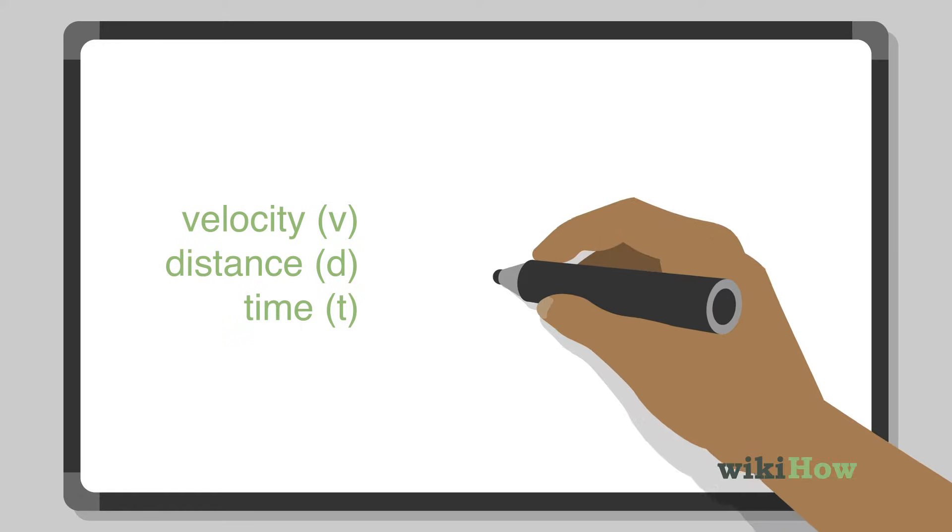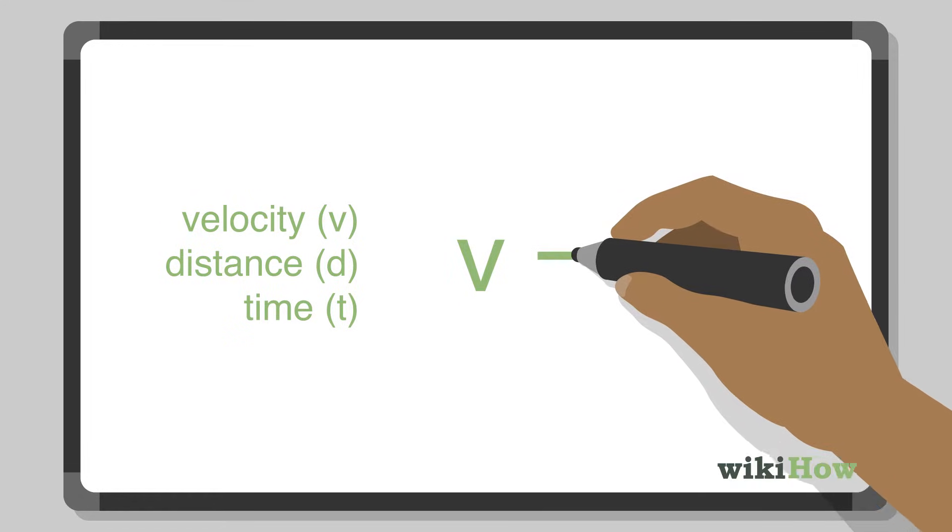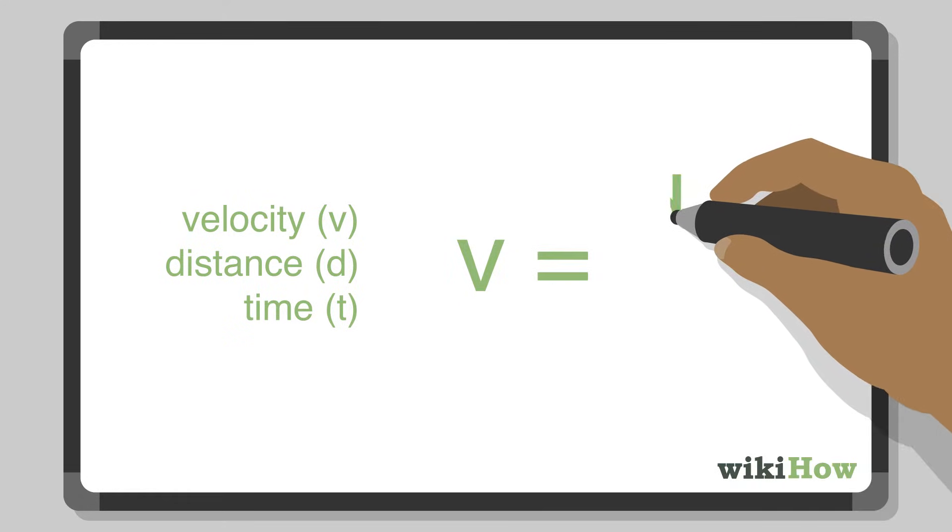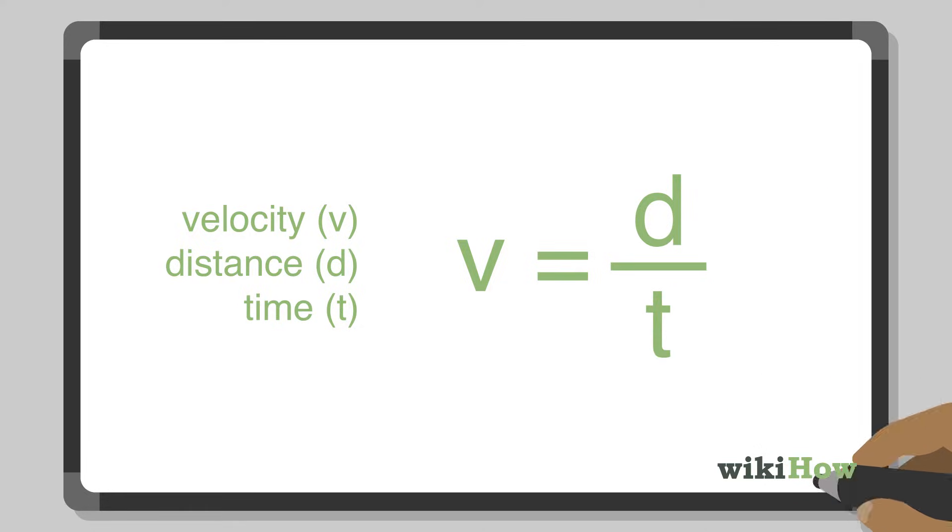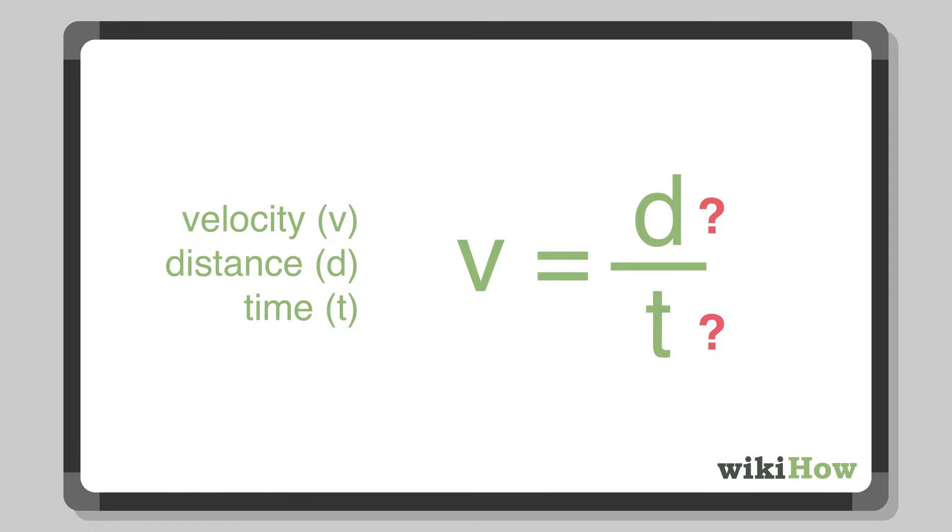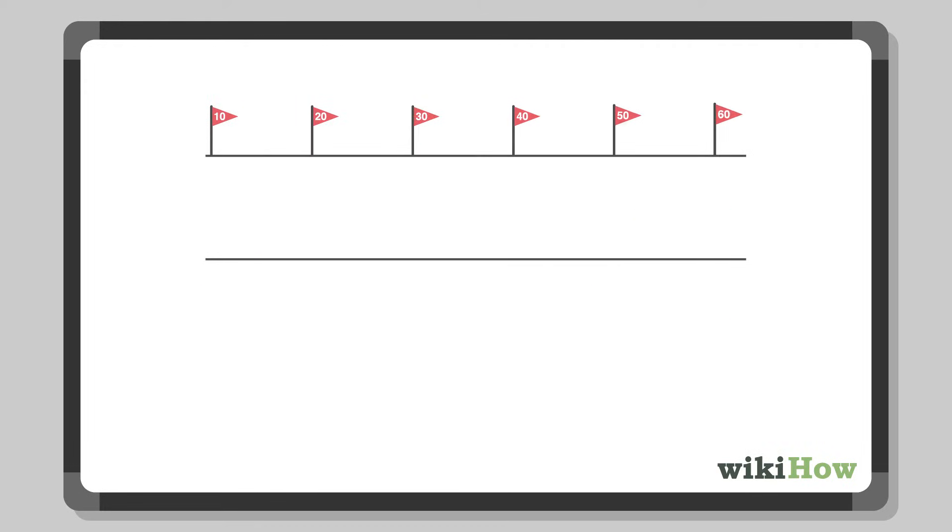The most basic formula for calculating velocity is v equals d over t. If you don't already know the time and distance, you'll need to calculate them first. Subtract the initial position from the final position to find distance, and subtract the start time from the end time to find the time.